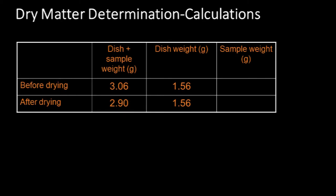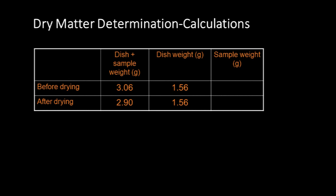The calculations can be done by the following way. Here is the weight of petri dish before drying and after drying. Before drying it is 3.06 grams along with the sample, and after drying it is 2.90 grams. The weight of the dish is 1.56 grams.